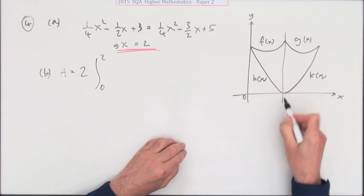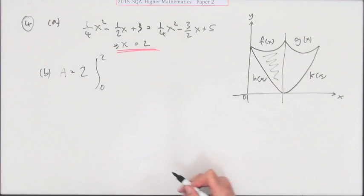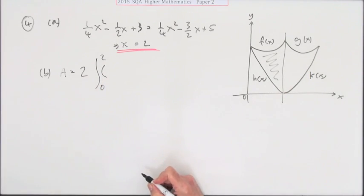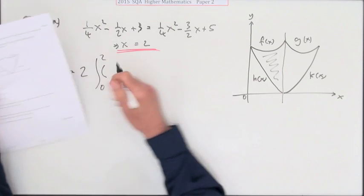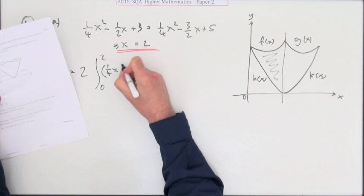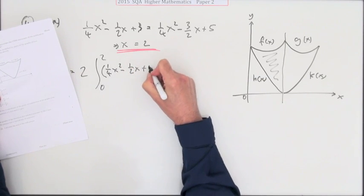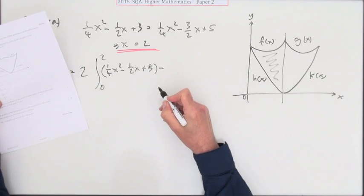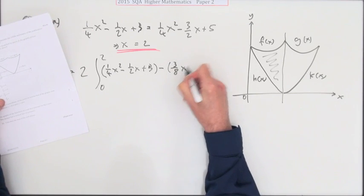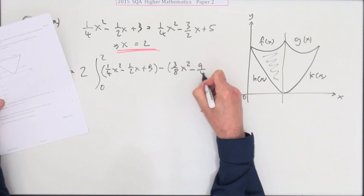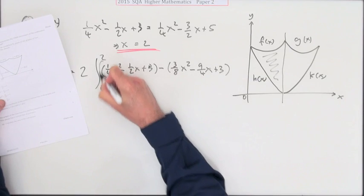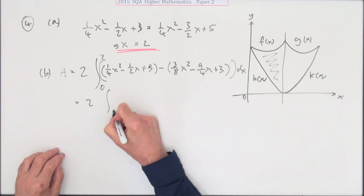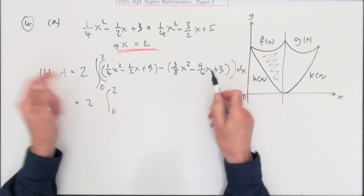You just need to work out this area here and then double it: the integral of f(x) - h(x). f(x) was ¼x² - ½x + 3, subtracting the lower curve h(x), which is 3/8x² - 9/4x + 3, all times dx. Now tidy that up.